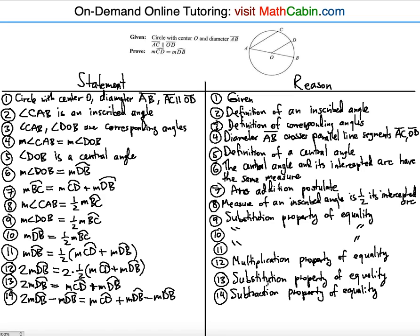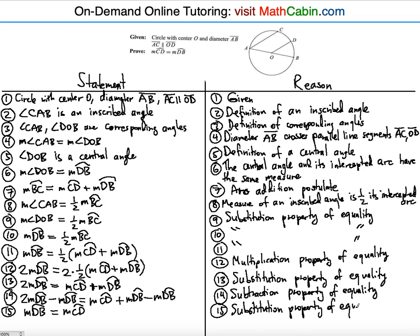Be careful not to confuse subtraction and substitution — subtracting is when we write a subtraction step; substitution is when we completely rewrite one side. Simplifying: measure of arc DB equals measure of arc CD. The reason is the substitution property of equality.